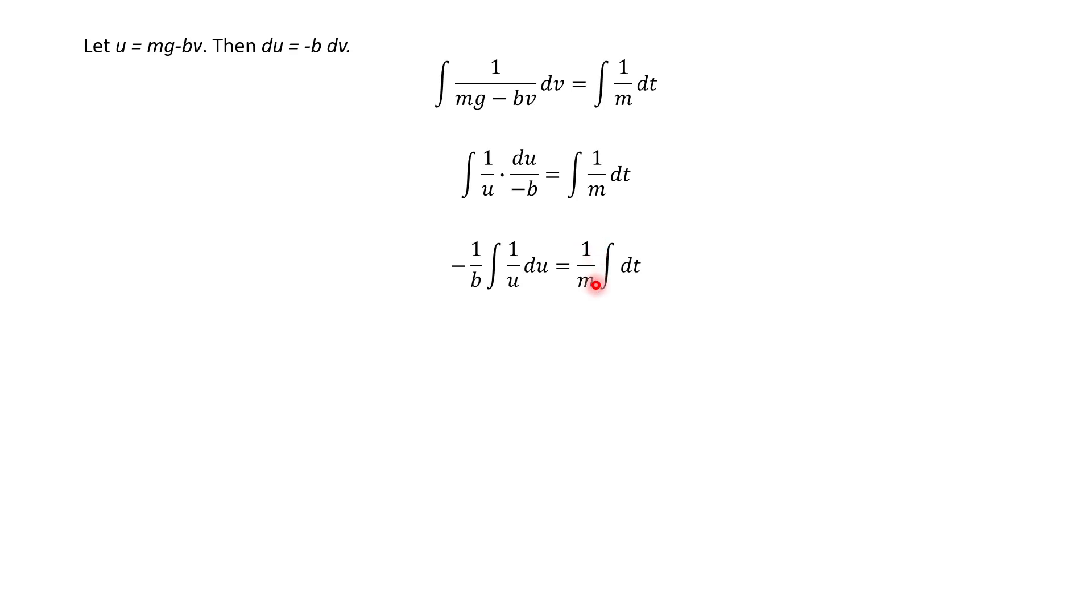And then the 1 over m is still there, I'm going to go ahead and factor out anything that's a constant, so the 1 over m on the right side is just going to go out front. The negative 1 over b is going to go out front here, and then we integrate. Alright, this is just 1 over u, so integrate that, we get ln of u, and then on the right side, this is integral of 1, which is just t, our variable.